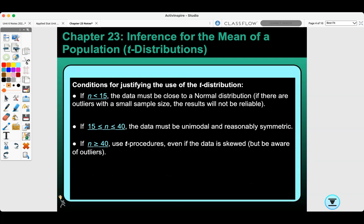Conditions for justifying the use of the T distribution: If n is less than 15, the data must be close to a normal distribution. If there are outliers with a small sample size, the result will not be reliable. If n is between 15 and 40, the data must be unimodal and reasonably symmetric. If n is greater than 40, you can use a T procedure even if the data is skewed, but be aware of any outliers.